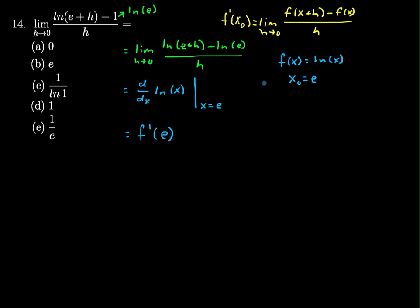We know that the derivative of the natural log of x is f'(x) equals 1 over x. That means f'(e), our derivative evaluated when x is e, equals 1 over e. So my answer is (e).